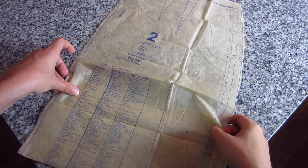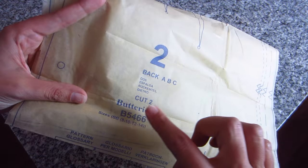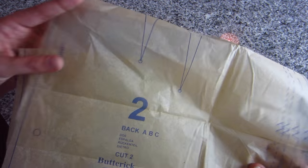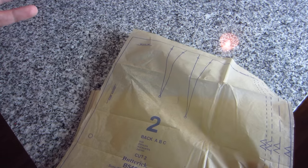So this is the back pattern piece for the same skirt A, B, and C. And this one tells you that you need to cut two of them, and that's because the back of the skirt actually has a seam going up the center of the back.